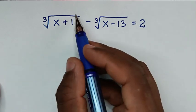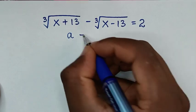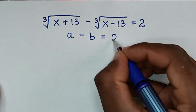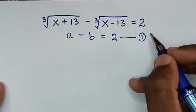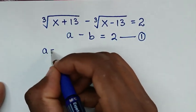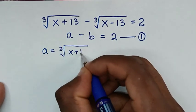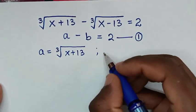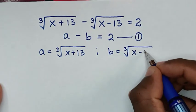In the first step, we let the first cube root as a, so our equation will be a minus b, where b is the second cube root, equal to 2. We call this equation 1. So a equals cube root of (x + 13), and b equals cube root of (x - 13).